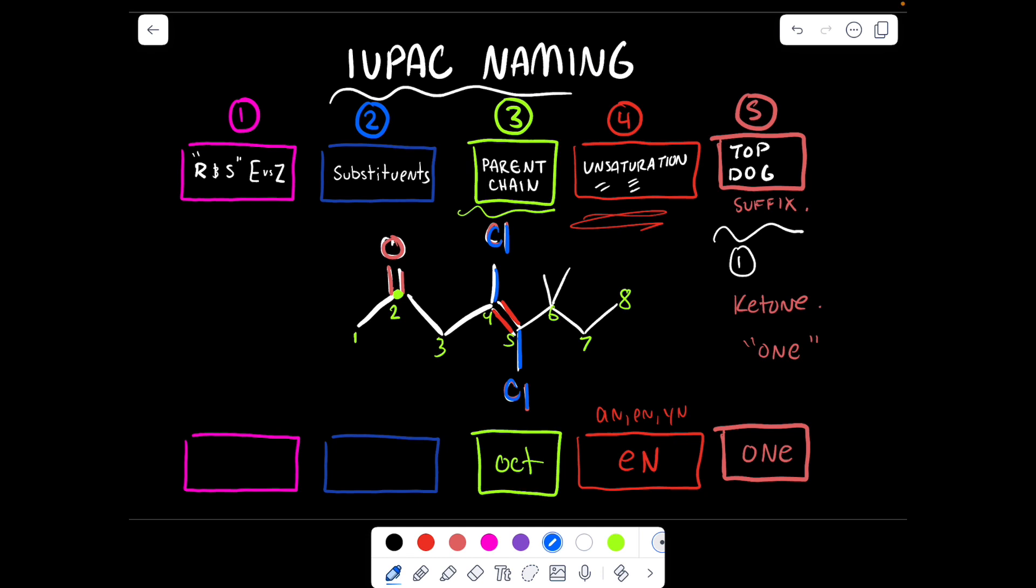That means there's dichloro. And then what carbons are they on? Well, they're on four and five. Dichloro, because there's two of them. One, two, and then you have to denote in the gaps the numbers. So this guy is on numbers four and five dichloro.